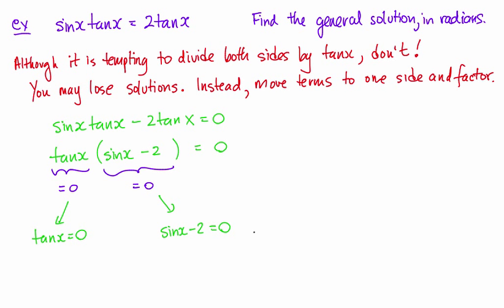Now, had I just cancelled out the tan(x), I would have had sin(x) is equal to 2, which is just this part. And I would have missed entirely this first type of solution. So again, we wanted to make sure we don't lose any solutions. So don't cancel things out. Instead, move things to one side and factor. Because now I can try and solve when is tan(x) equal to 0.